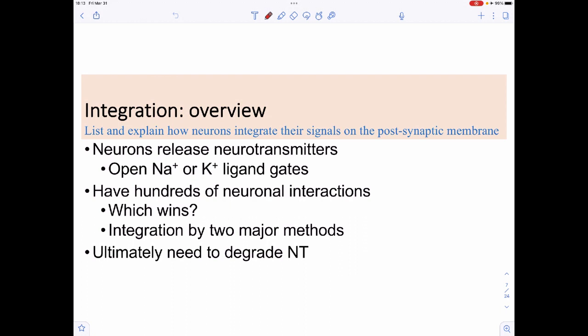When we have those neurotransmitters being released, the question is, what do you do with all that information? It turns out those neurotransmitters are going to do one of two things: they're either going to open up sodium gates or potassium gates. At least very simply, those are going to be the two things that they can do. There are actually other options, but we're going to only focus on these two.